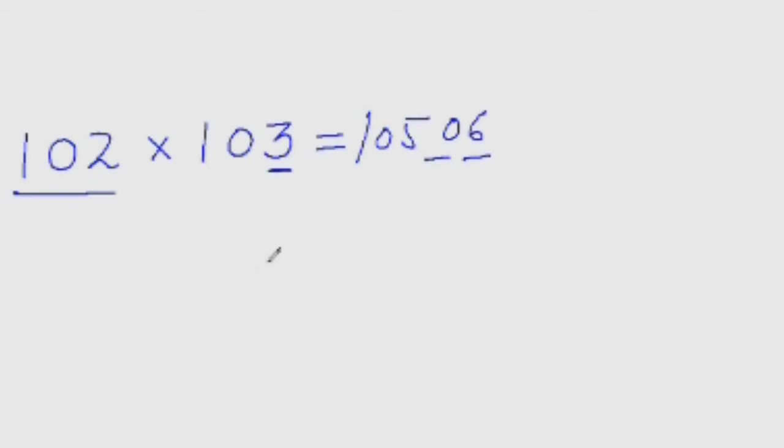Again I have used the same base method of multiplication. I have used the base as 100. So 103 is 3 more than the 100. So add this extra 3 to this entire number, so we will get the first 3 digits of your answer.